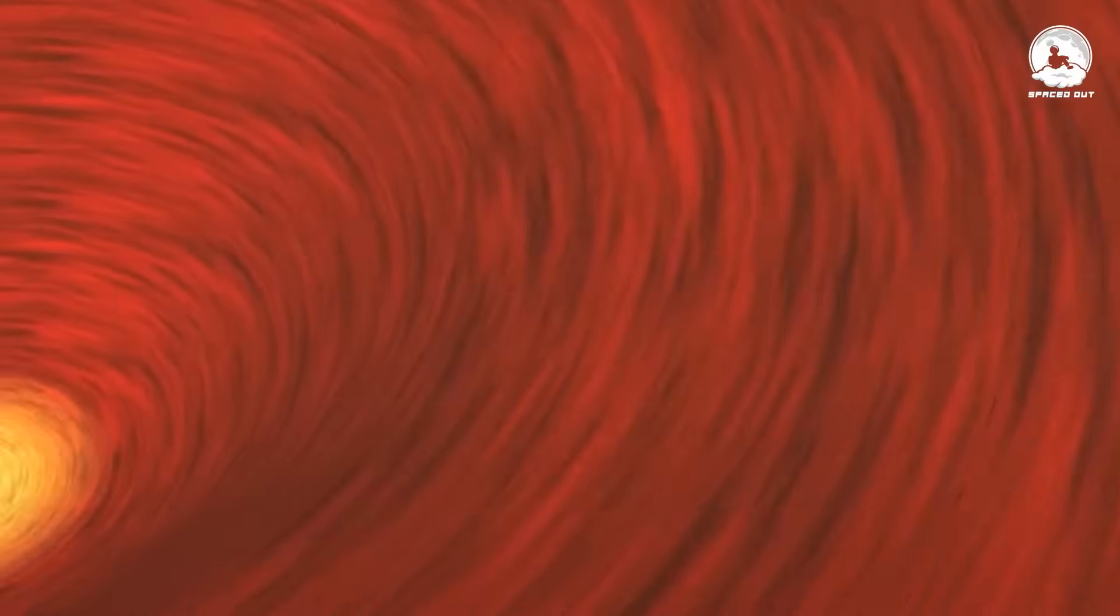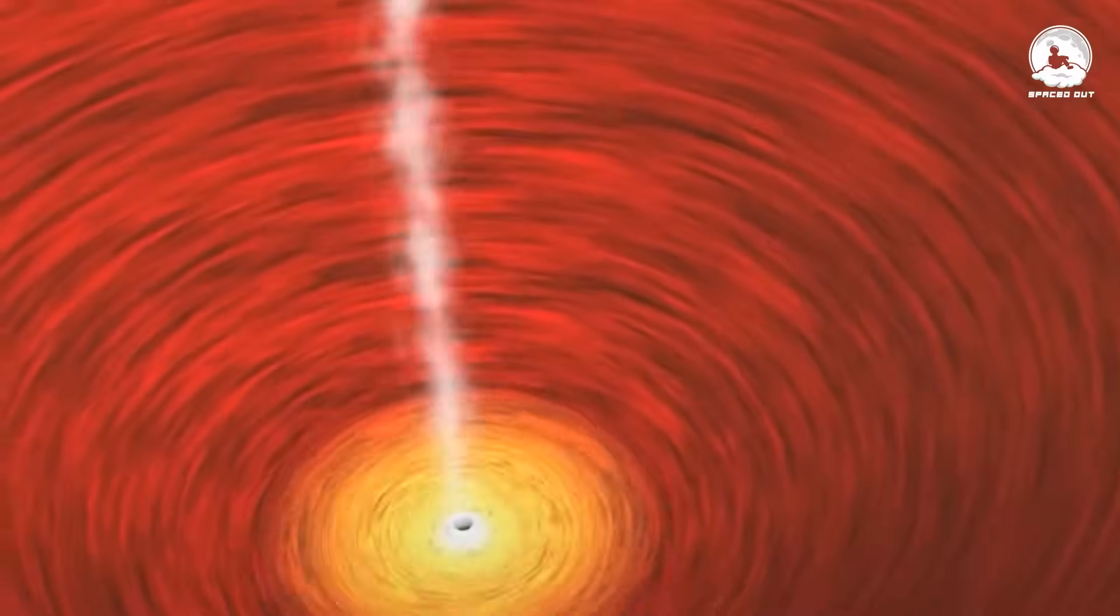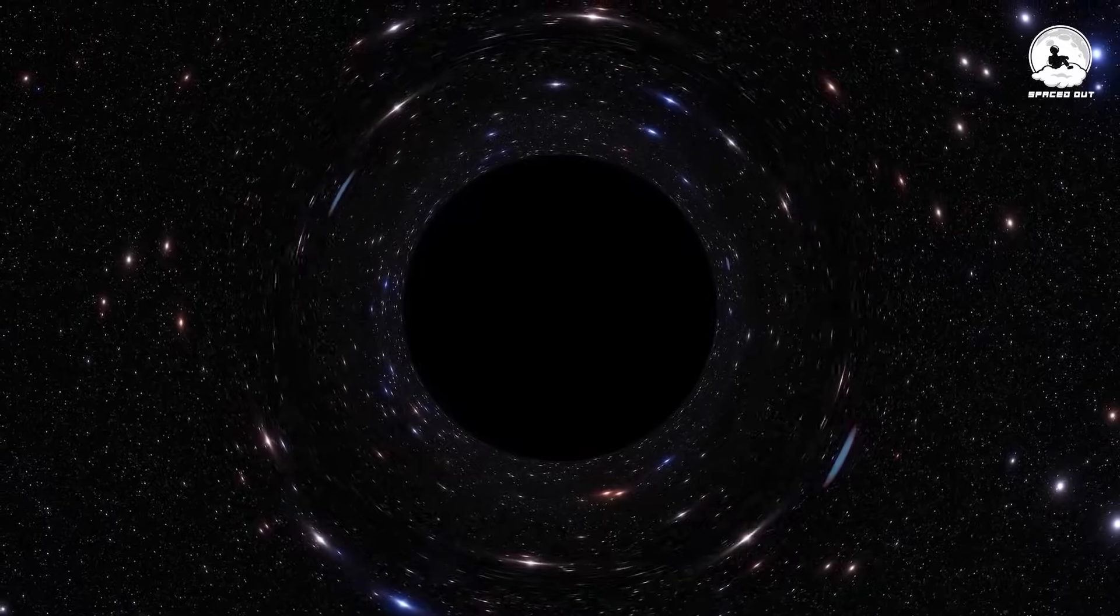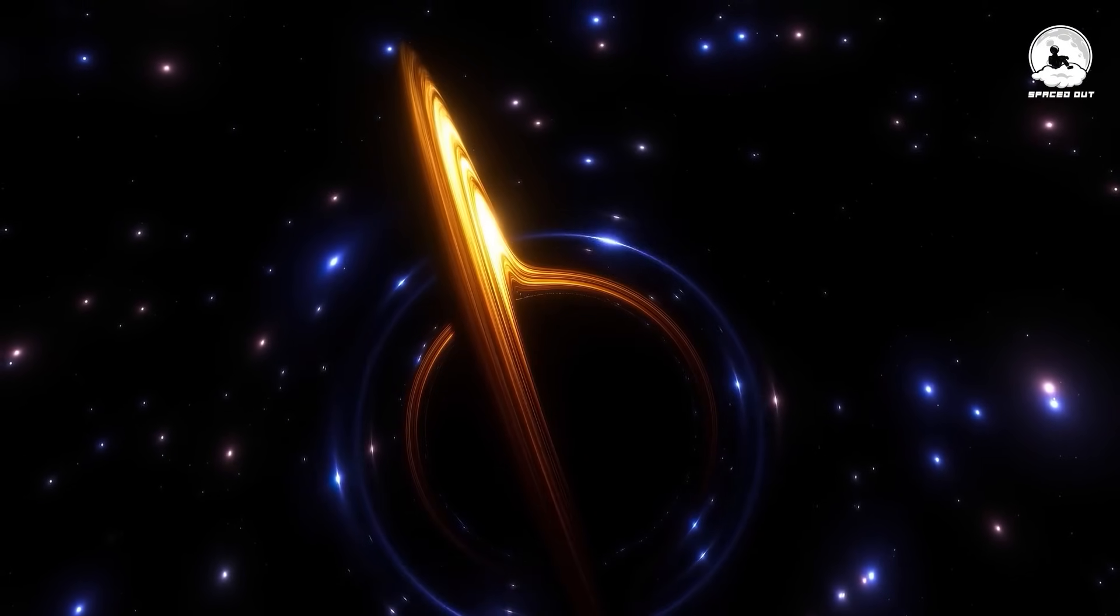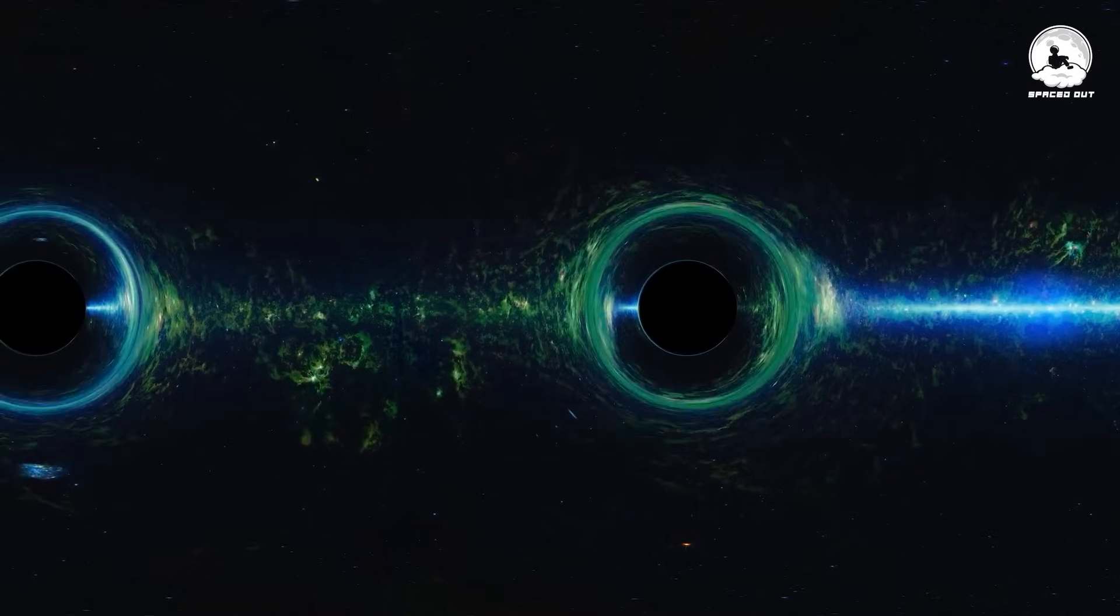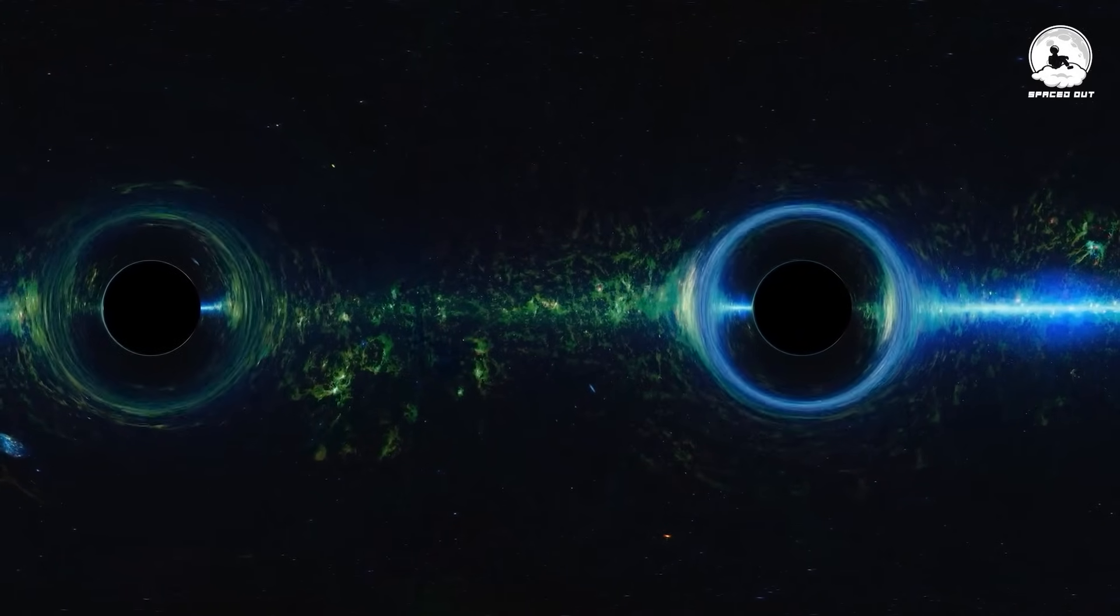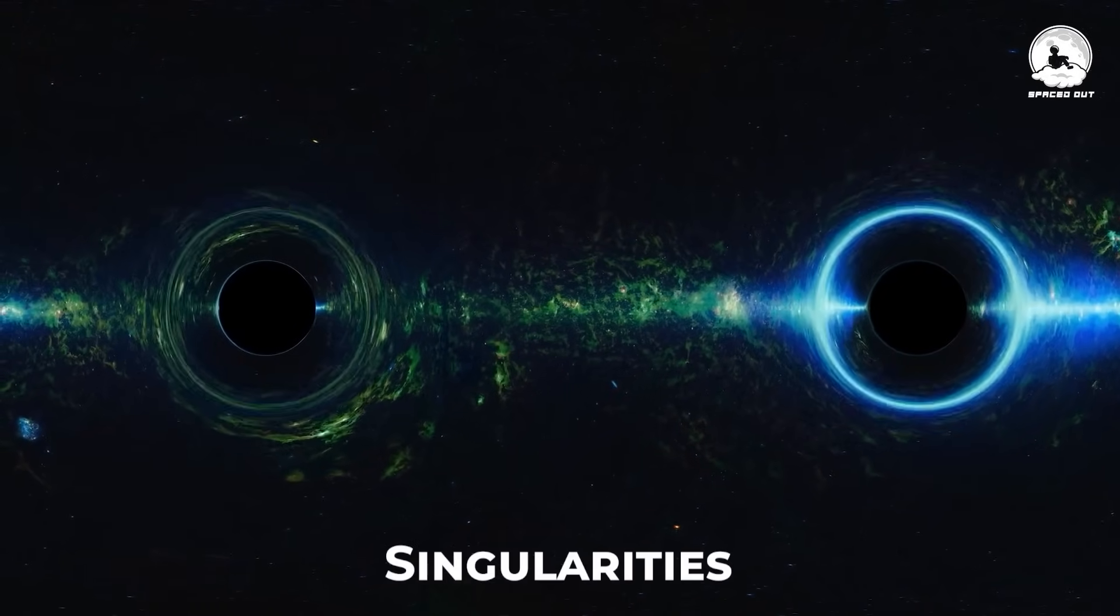Objects within the event horizon and the singularity of a black hole likely comprise an exceedingly small center, even smaller than the tiniest point imaginable. In physics, these minuscule points are termed singularities.